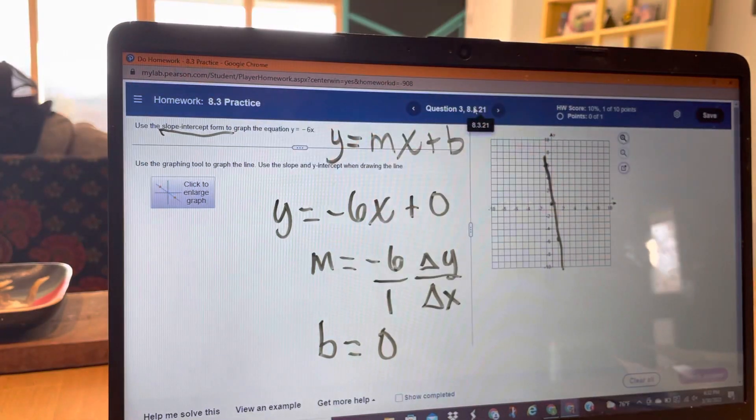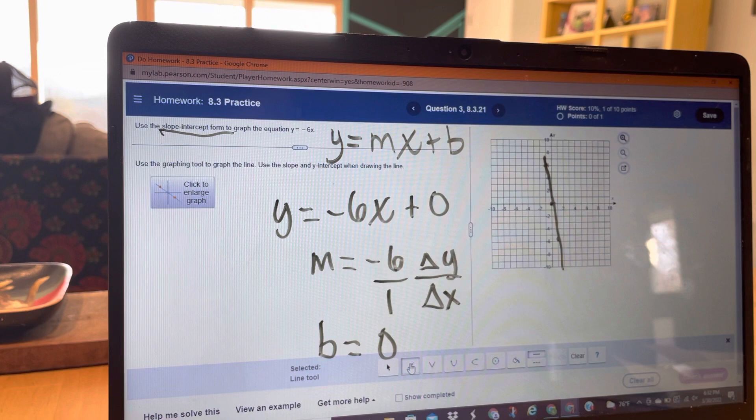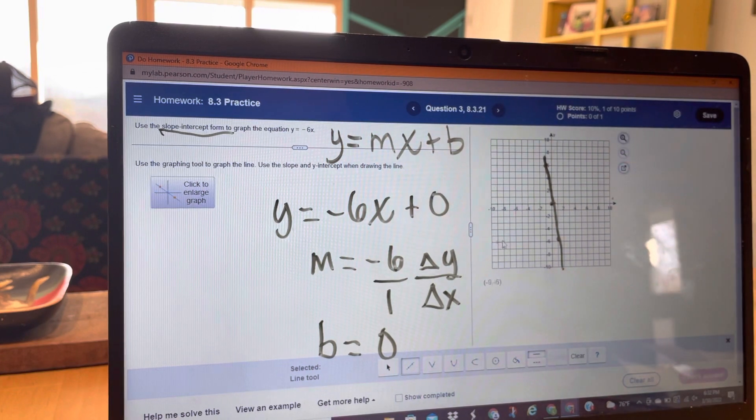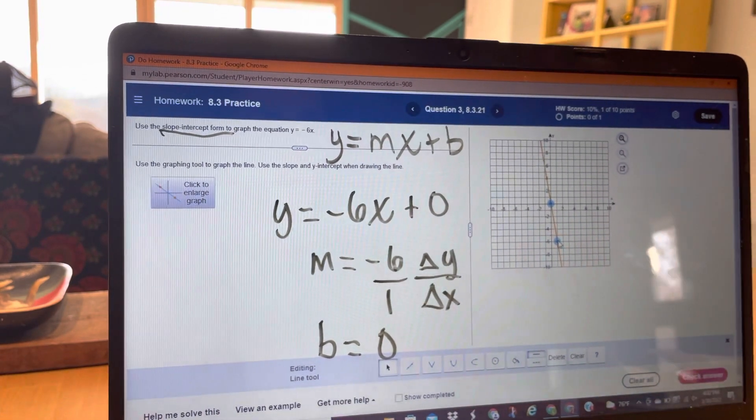Now let's do that with our actual graphing tool. So we need our line. So I'm going to put 1 here. Down 6, right 1. I'm going to erase my own line. There it is.